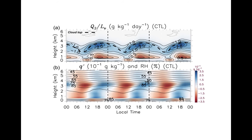The anomalous humidity profile seen at bottom in shaded colors is tilted to the right with height on the time axis, meaning that humidification occurs at higher altitudes after it occurs at lower altitudes. In other words, shallow convection mostly confined to the boundary layer moistens the troposphere where it resides before the deeper convection develops.